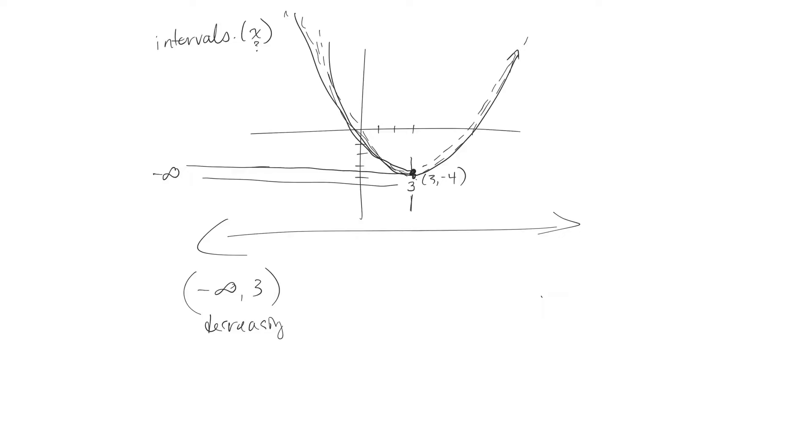And then, starting at 3, going all the way this way, the graph is now increasing. So the x values, if I start at 3 and go to infinity, what's happening in the graph? The graph is increasing.